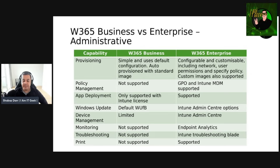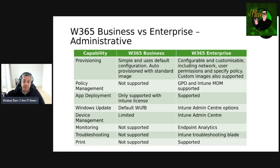Moving on to looking at things administratively, let's do a comparison from an administrative perspective. From a provisioning capability, Windows 365 Business is simple and uses a default configuration — it's auto-provisioned with standard images. From a Windows 365 Enterprise perspective, it's configurable and customisable, including the network, user permissions, and specific policies. Custom images are also supported for Enterprise, but not for Business. From a policy management capability perspective, W365 Business is not supported, but with W365 Enterprise you get GPO and Intune MDM — both are supported. And obviously it's got hybrid join support as well, so GPO has to be supported.